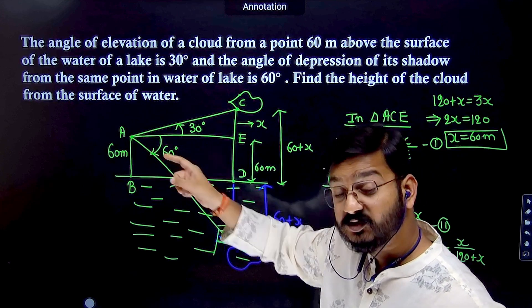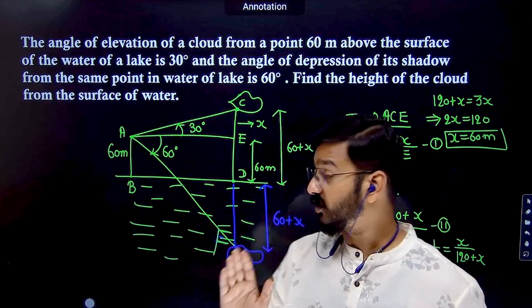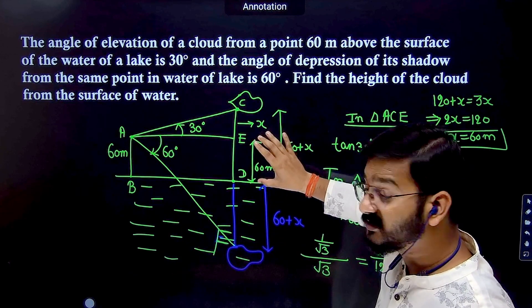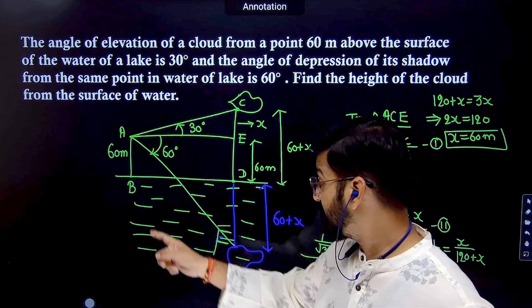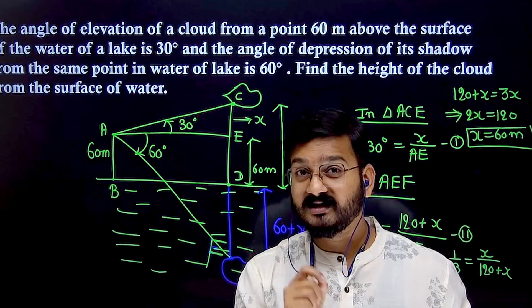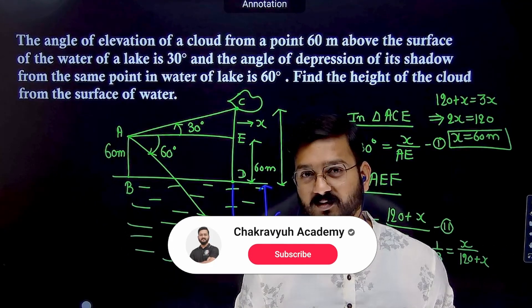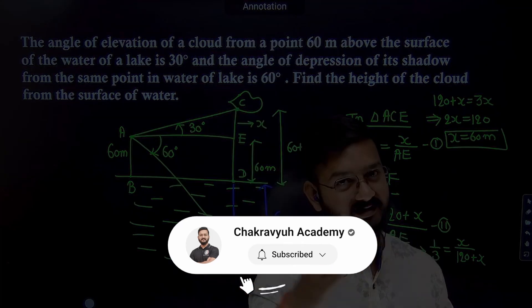You can use sin 60° = 180/AF, since sine is opposite over hypotenuse. Calculate AF as homework and write your answer in the comments. Share this concept with your friends and classmates. Prepare well for your board exam. See you in the next video.